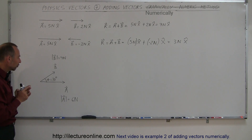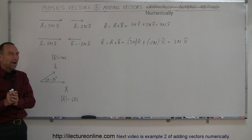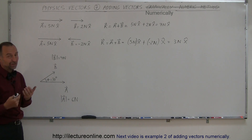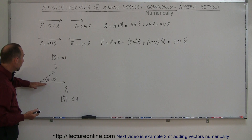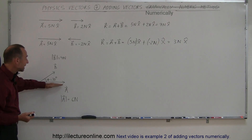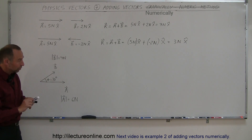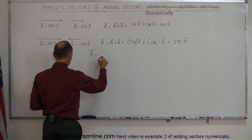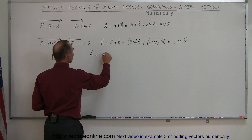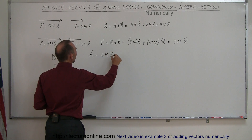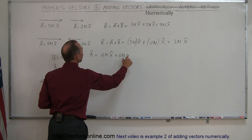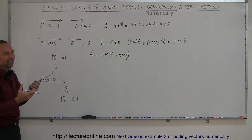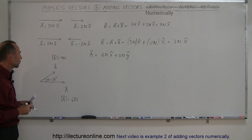What you need to do first is find the x and y components of each of the two vectors. For the A vector that's very straightforward — there's no y-component because the vector is pointing in the x-direction only. So you can write that the A vector equals 6 Newtons in the x-direction plus 0 Newtons in the y-direction.